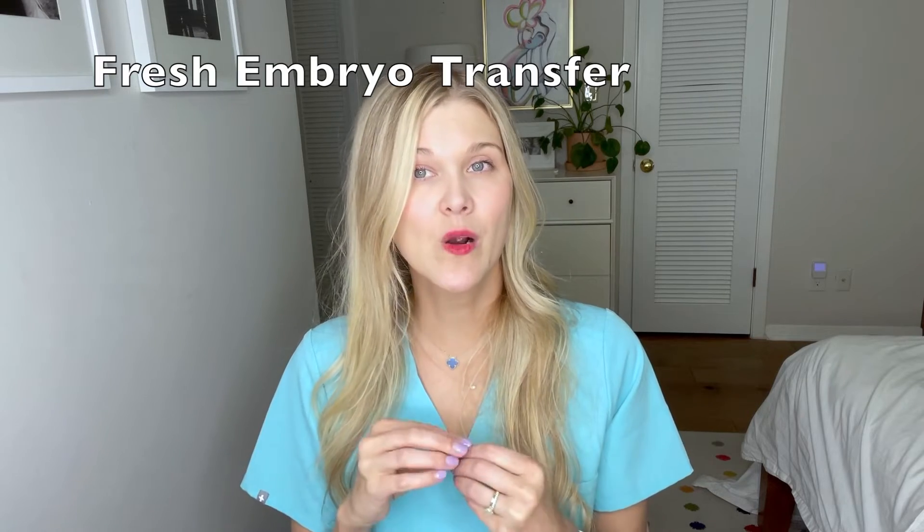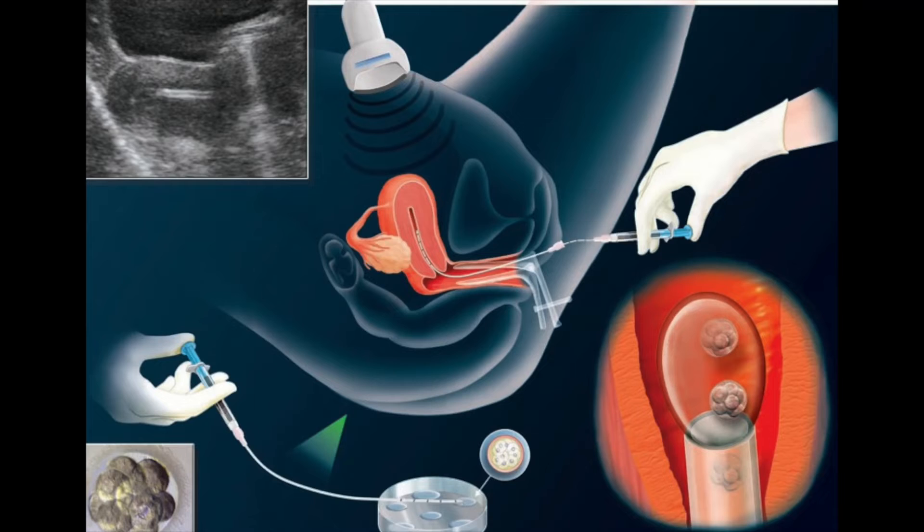A fresh embryo transfer means that embryo was never frozen. Five days after the egg retrieval - considering that day zero - you would look under the microscope, take a good look at an embryo, and then perform the transfer. The embryo gets placed into a small catheter, the speculum is placed in the vagina, and using ultrasound guidance that catheter is inserted through the cervix into the uterine cavity. The embryo is deposited close to the top or fundus of the uterus. Then you wait about nine days to take a pregnancy test.